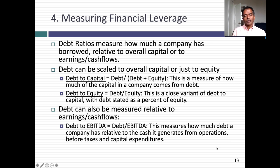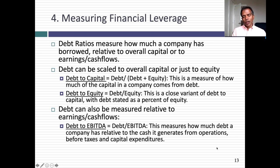Companies can choose to borrow or not. Debt ratios measure how much a company has borrowed, and what you scale debt to gives different measures. You can scale debt to capital: debt divided by equity is the debt-to-equity ratio; debt divided by debt plus equity is the debt-to-capital ratio. Those are distinct calculations.